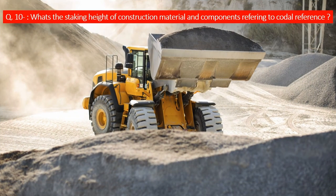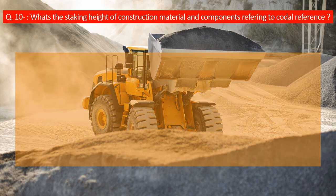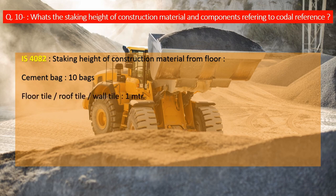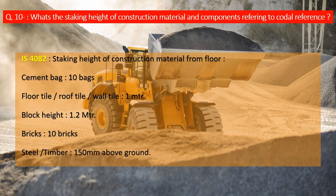Question number 10: What is the stacking height of construction material and components referring to codal references? The codal reference for stacking of construction material is IS 4082. Stacking heights from floor: cement bags — 10 bags can be stacked from floor; floor tile, roof tile, or wall tile stacking height is 1 meter; block height stacking is 1.2 meters from ground; for bricks, stacking height is 10 bricks from ground; steel or timber can be stacked 150 mm above the ground.